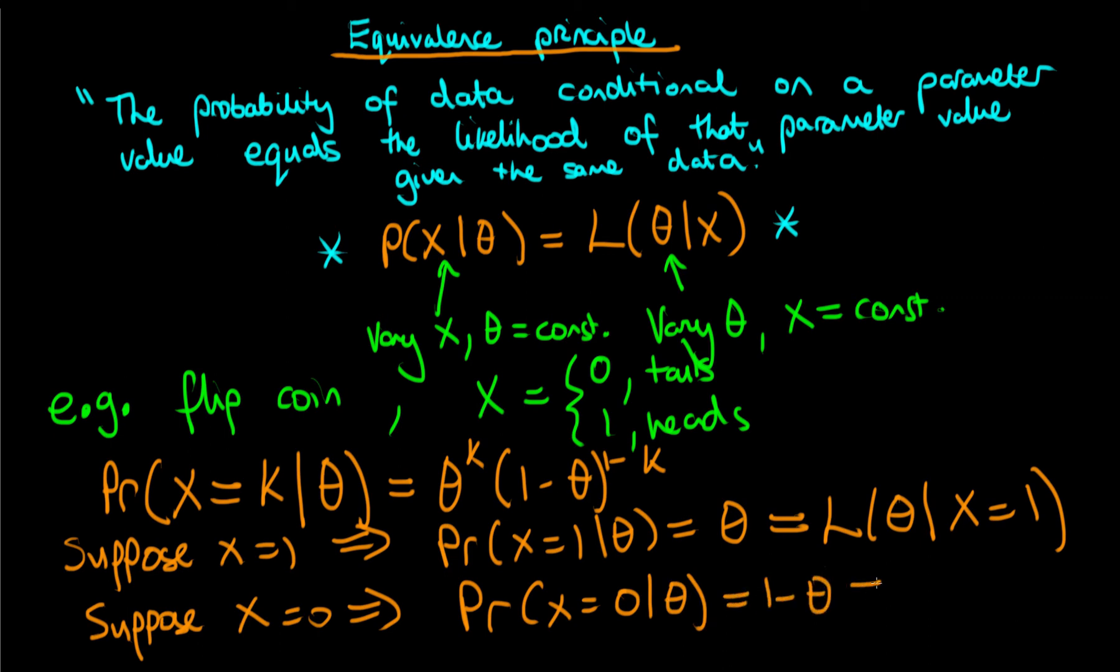So we're just working out the probability of it being tails where theta here I should have said is the probability that we obtain heads. And using the equivalence principle we can work out the likelihood of that outcome. So that's just the likelihood of theta conditional on x being equal to zero.